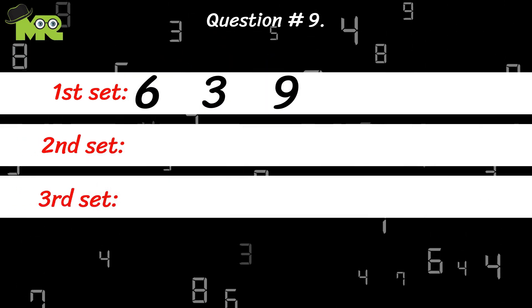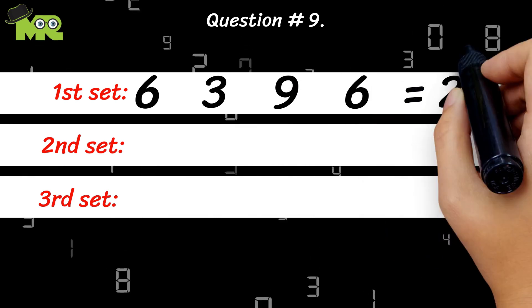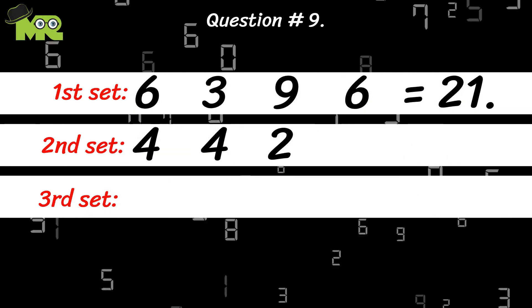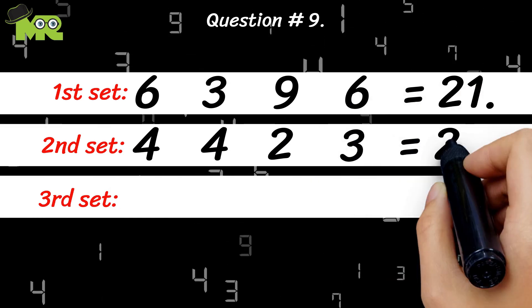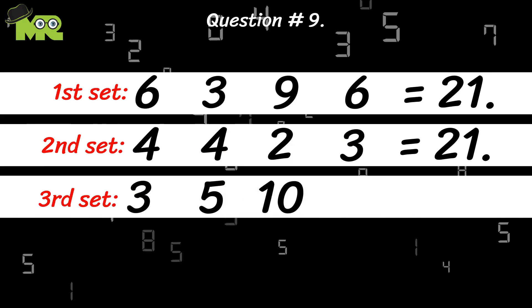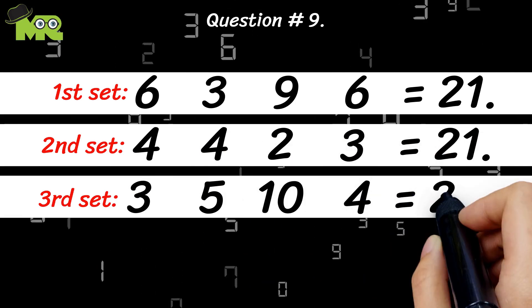We're giving you three different sets of numbers. 6, 3, 9, 6 should equal 21. 4, 4, 2, 3 should equal 21. 3, 5, 10, 4 should equal 21.